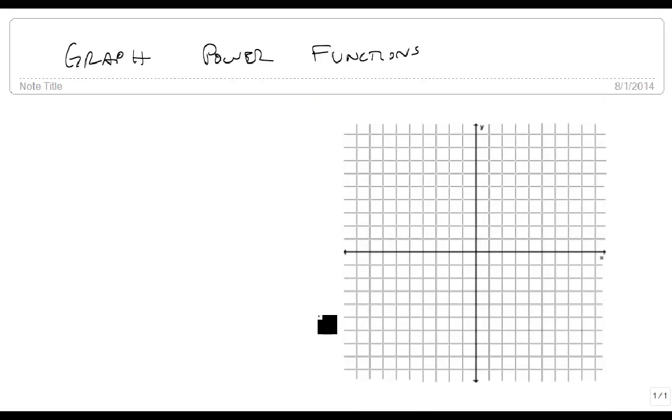Suppose we want to graph f(x) = x². Because it's even, that means on the right side it's going to be going positive, and on the left side it's going to be going positive. So we can start at (0,0), and then we just get a couple of points.